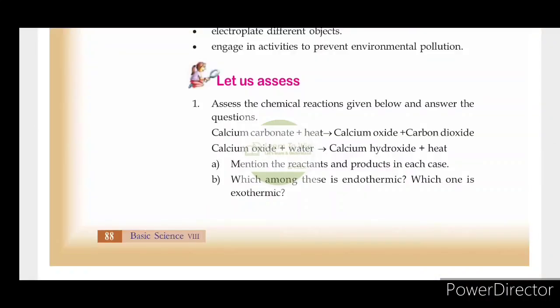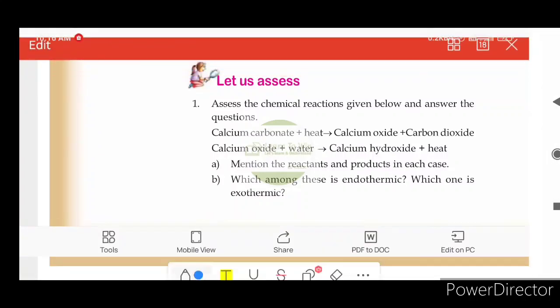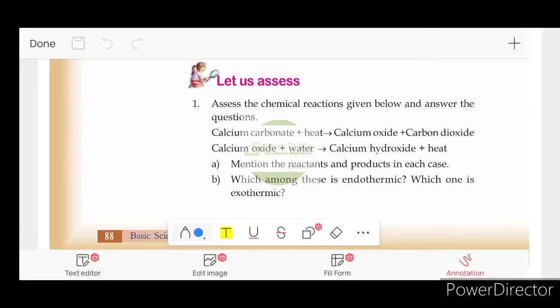Assess the chemical reaction given below and answer the questions. Calcium carbonate and heat will react to give calcium oxide and carbon dioxide. Calcium oxide will react with water to give calcium hydroxide. Let us mention the reactants and products in each case. The reactants are calcium carbonate. The products are calcium oxide and carbon dioxide from water. These are two reactions.